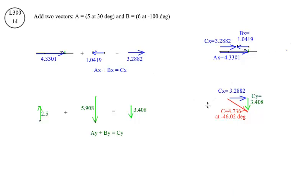Then combining the two components of the C vector: there's CX at 3.28 and CY at 3.4. Adding those two vectors, we get the C vector: 4.7. We use the Pythagorean theorem — CX squared plus CY squared, square root of that equals C. The angle with respect to the X axis is 46 degrees. We get that from the tangent function: the tangent of that angle equals CY divided by CX. Attach the negative sign because that's a clockwise angle with respect to the X axis.